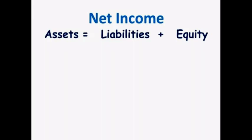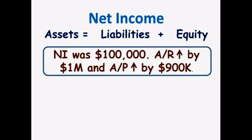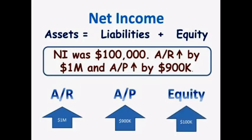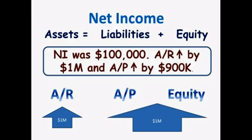Another possible situation is that our store did not receive any payment from its customers and is still waiting to be paid, and that the store has not paid any of its expenses but will pay them in the future. In that case, assets increased by $1,000,000 because accounts receivable increased by $1,000,000. Liabilities increased by $900,000 because accounts payable increased by $900,000. And equity increased by $100,000 because net income increased by $100,000. The $900,000 increase in liabilities and the $100,000 increase in equity come out to a $1,000,000 increase, and once again our accounting equation balances.